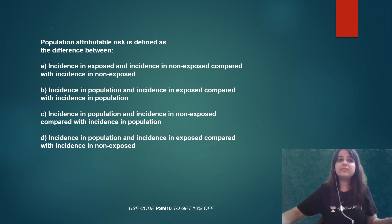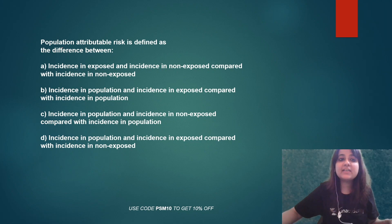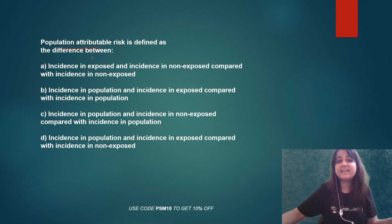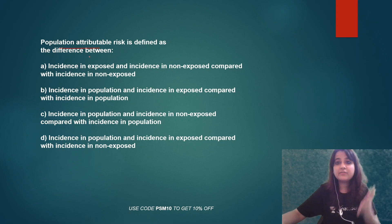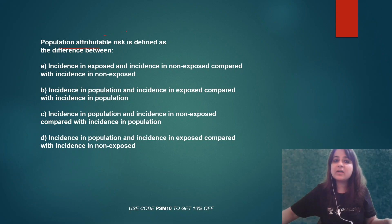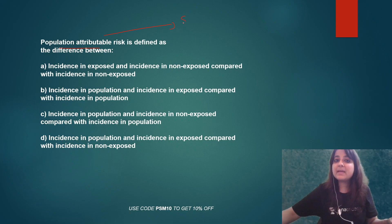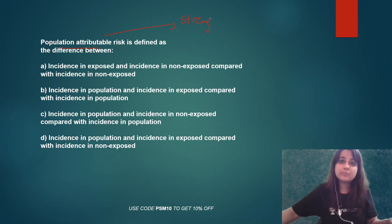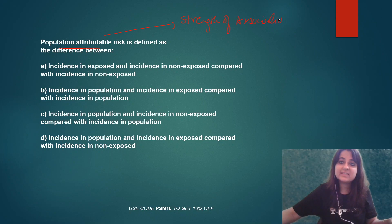So what is the question for today? Population attributable risk — this is one of the very important topics. What is population attributable risk? It is a measure of strength of association, used in a cohort study.